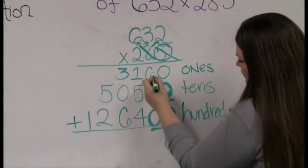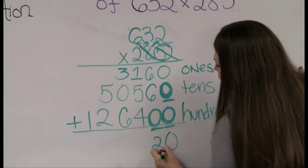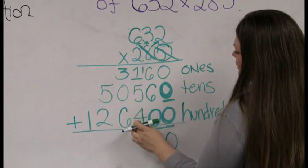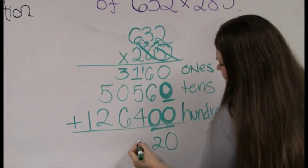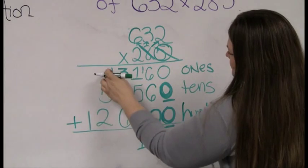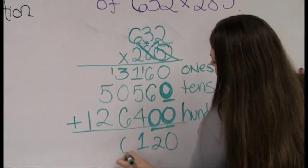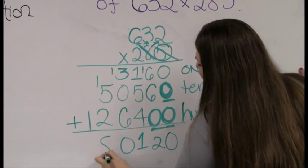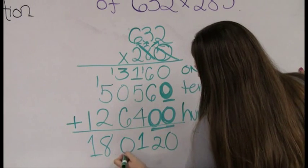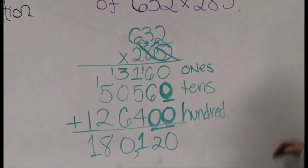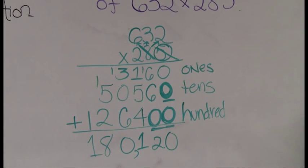Adding the three rows: 0, then 1+2 carry... working through column by column gives 0, 12, 9, 9, 7, 8, and 1. The final answer is 180,120.